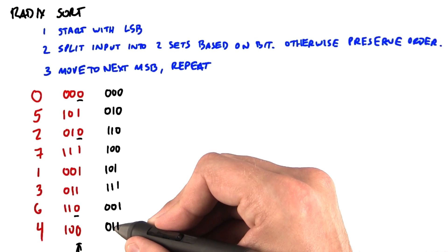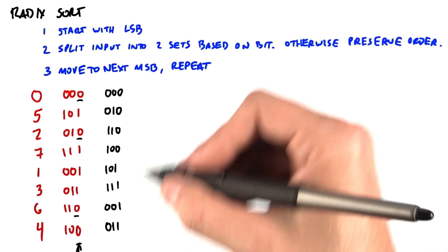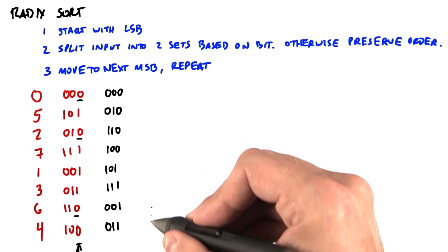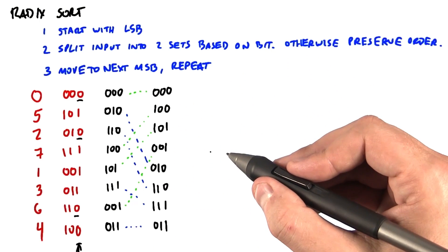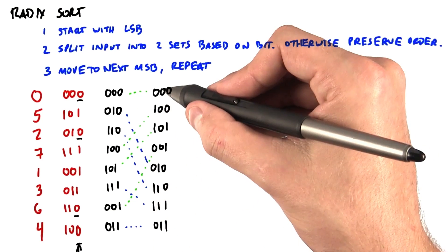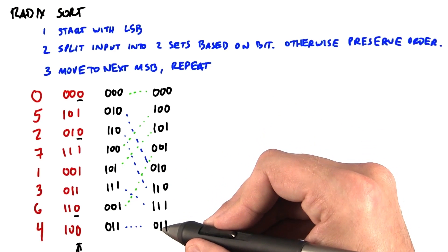Now we move to the next least significant bit, the bit in the middle, and we're going to do the same thing. We're going to take all the zeros and put them up top, and then we're going to take all the ones and put them below. And here the dotted lines are just showing the data movement that we're looking at. The green lines are the ones where the middle bits are zero, and the blue line is the one where the middle bits are one.